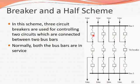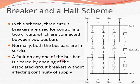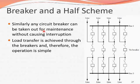Three circuit breakers — one, two, and three — control two circuits. The incoming line is connected by two breakers, and the outgoing lines are also between two circuit breakers. Normally both bus bars are in service. A fault on any bus bar is cleared by opening the associated circuit breakers without affecting continuity of supply. A bus can be taken out for maintenance without causing interruption. Load transfer is achieved through the breakers, so operation is simple.